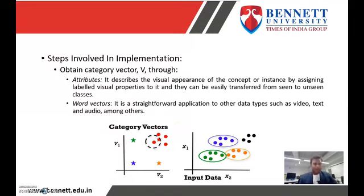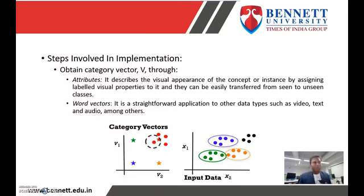Obtaining category vectors is done through attributes and word vectors. Attributes describe the visual appearance of a concept or instance by assigning labelled visual properties to it, and they can be easily transferred from seen to unseen classes. In the case of word vectors, it is a straightforward application to other data types such as video, text, and audio.